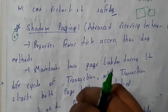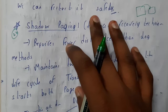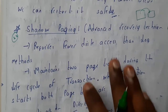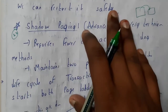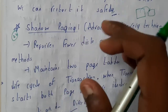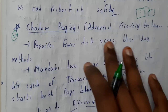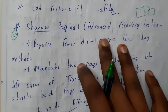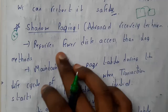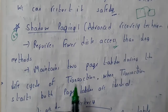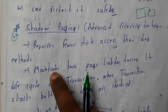We use shadow paging because logs have a few drawbacks — the access time, waiting time, and the requirement for each and every read operation. Even if we place checkpoints, that could be an issue. Shadow paging requires fewer disk accesses than the log method, making it better than log-based recovery.